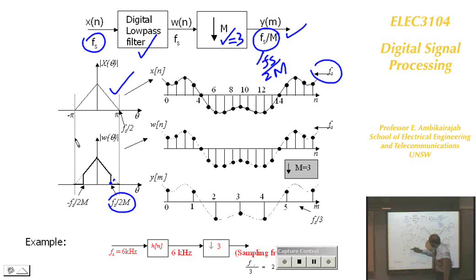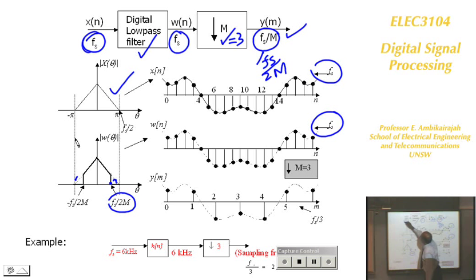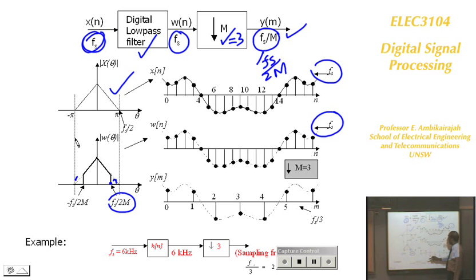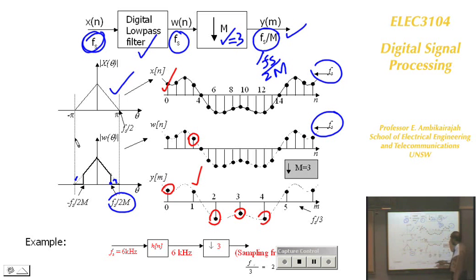You remove the out-of-band portion using the low-pass filter. The signal before and after the filter is at the same sampling frequency. Then downsampling by 3 means retaining every third sample: the first is retained, the next two dropped, then one retained, two dropped, and so on. The resulting signal now has a bandwidth of Fs/3.